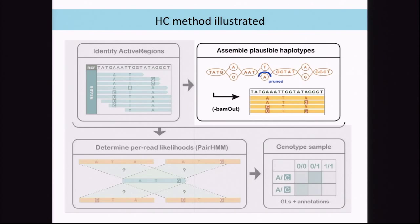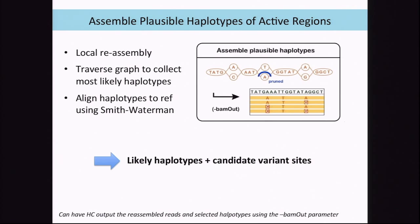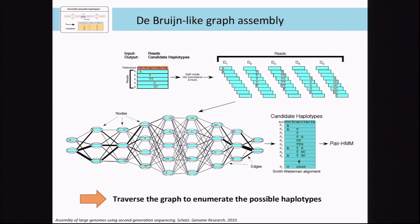The next step is to assemble plausible haplotypes of the active regions. We do this by local reassembly using a De Bruijn graph-like assembly step. We take a bunch of reads aligned to our reference genome, chop them up into K-mers, and create a graph. The blue bars are the K-mers and edges exist where K-mers overlap. Edges are weighted with how many reads support that overlap, and we get our haplotypes by traversing the graph.